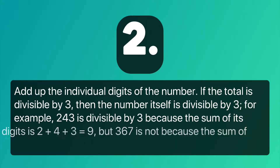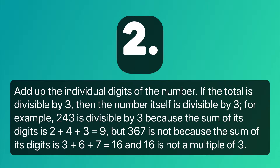Number 2: Add up all the individual digits of a number. If the total is divisible by 3, then the number itself is divisible by 3. For example, 243 is divisible by 3 because the sum of its digits is 2 + 4 + 3 = 9.